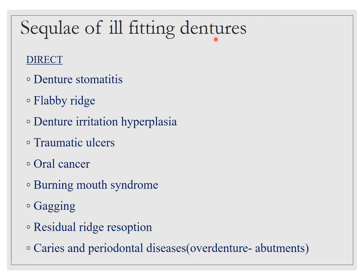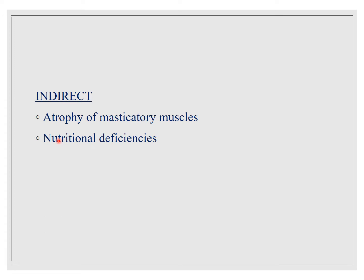Sequelae of ill-fitting dentures are divided into direct and indirect. For direct, there's denture stomatitis, flabby ridge, denture irritation hyperplasia, traumatic ulcers, oral cancer, burning mouth syndrome, gagging, residual ridge resorption, caries, and periodontal diseases — the latter in concern with the overdenture compartment.